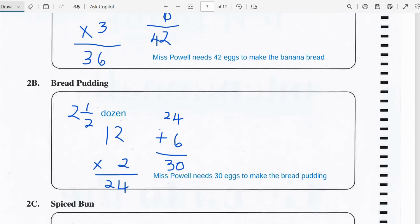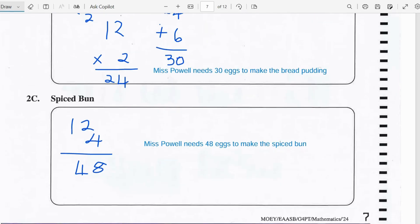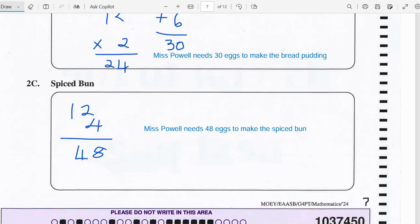Now for the bread pudding she needs 2 and a half dozen. So therefore we can multiply 2 times 12, again because 12 is a dozen, and that will give us 24. And we still need a half dozen which is 6 eggs, so we'll add 24 to 6 and that gives us 30 eggs. So Miss Powell needs 30 eggs to make the bread pudding.